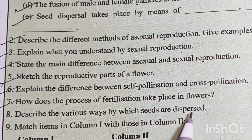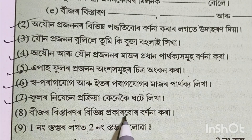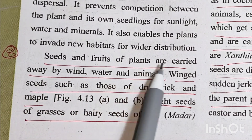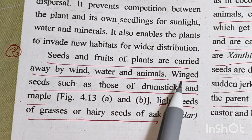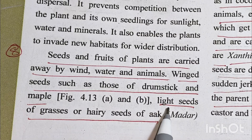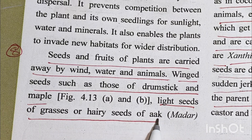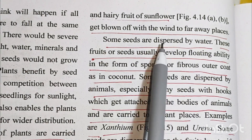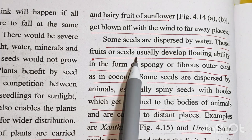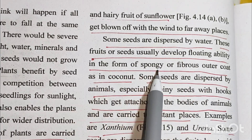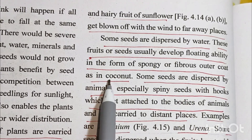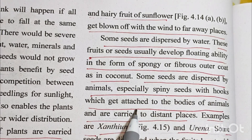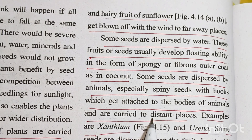Number 8: Describe the various ways by which seeds are dispersed. Seeds and fruits of plants are carried away by wind, water and animals. Wind seeds such as those of drumstick and maple, light seeds of grasses, hairy seeds of oak and hairy fruits of sunflower get blown off to faraway places. Some seeds dispersed by water develop floating ability such as a spongy or fibrous outer coat, as in coconut. Some seeds are dispersed by animals, especially spiny seeds with hooks which get attached to the bodies of animals and are carried to distant places.